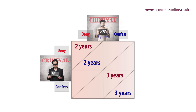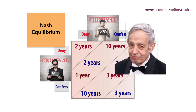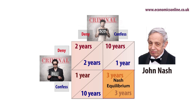But if one confesses and the other denies, the one who confesses gets just one year while the one who denies gets ten years. The least risky solution is to confess, because denying while your associate confesses gives the worst possible sentence. Both players predict the other will confess, so they both confess. This is the dominant strategy. Confessing is also the Nash equilibrium, named after the late Nobel Prize-winning economist John Nash.